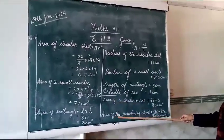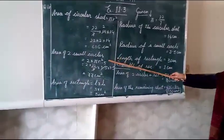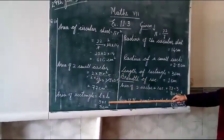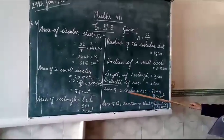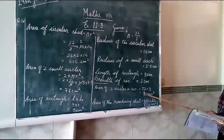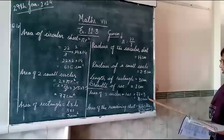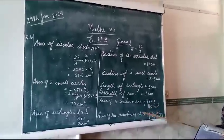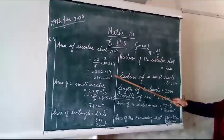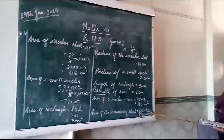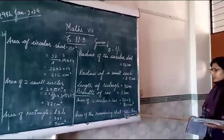You have to find out the area of the remaining sheet. For that you need to add the areas of 2 small circles and area of the rectangle. As you get the area of the rectangle as well as area of 2 circles, then 80 cm square. Then this total area will be subtracted from the area of the circular sheet. So finally you get the area of the remaining sheet that is 536 cm square.